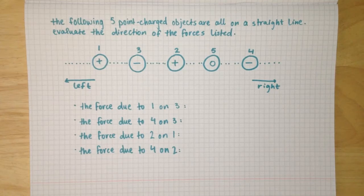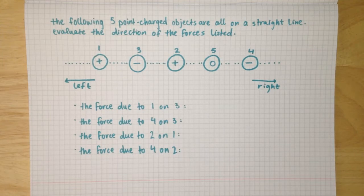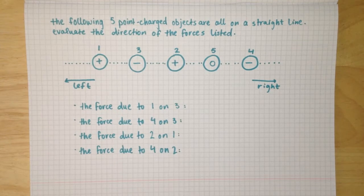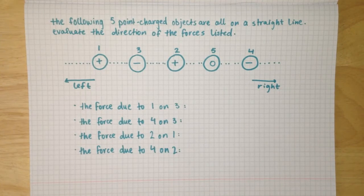The following five charged objects are all on a straight line — evaluate the direction of the forces listed. For this problem, we have to focus on just the two objects that each of the four options is presenting us, and ignore the rest. For the first one, let's look at the force due to object one on object three, so we just focus on these two and ignore the rest.